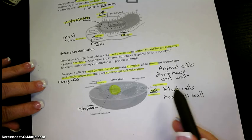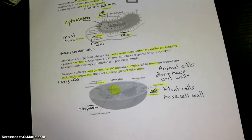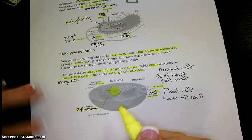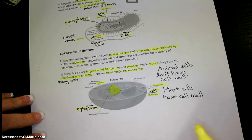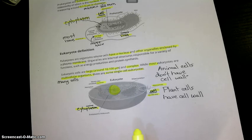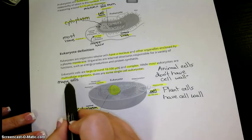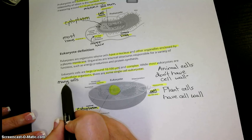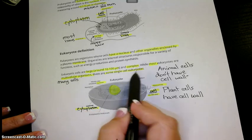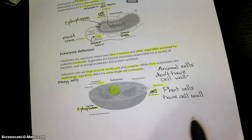When we look at the things they have in common, they both have cytoplasm, they both have a cell membrane, they both have ribosomes, and then there are things that are different. So most of your eukaryotes are multicellular, but some are unicellular. Protists are unicellular.